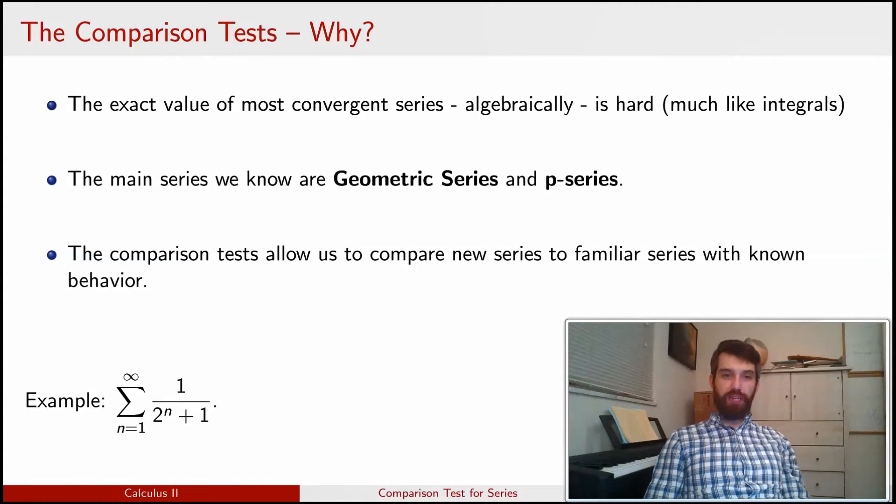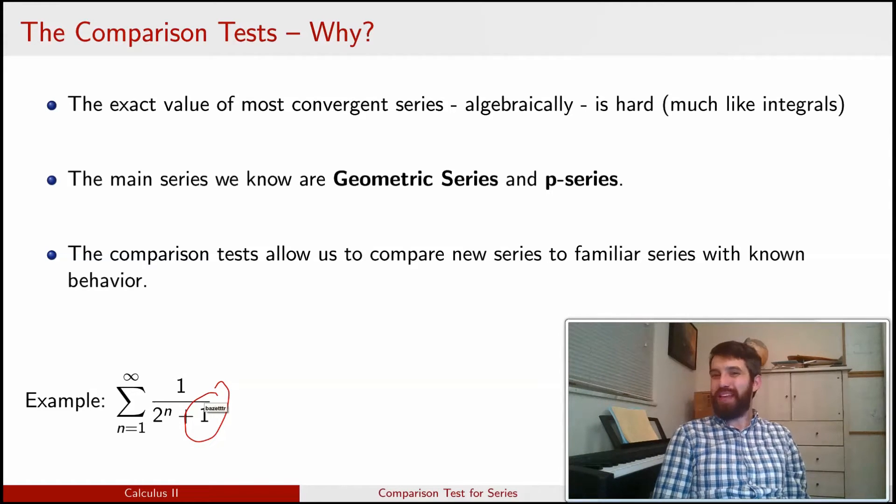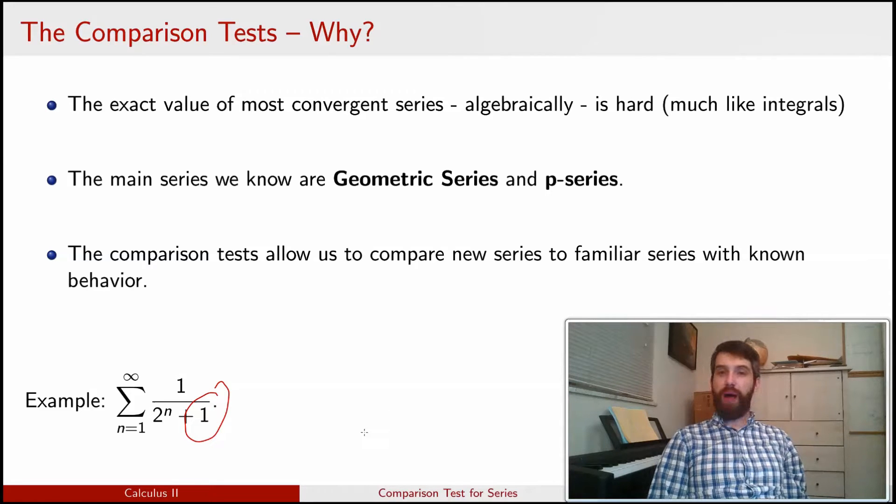Take, for example, the series that is the sum of 1 over 2 to the n plus 1. In my mind, the plus 1 that I have here really shouldn't matter. As n gets large, 2 to the n is enormous, and adding plus 1 to it really doesn't make any difference at all. Effectively, this series is 1 divided by 2 to the power of n. That should be sufficient.